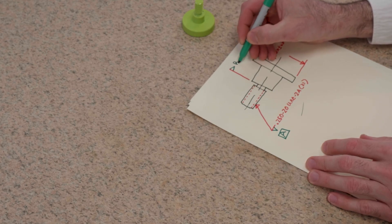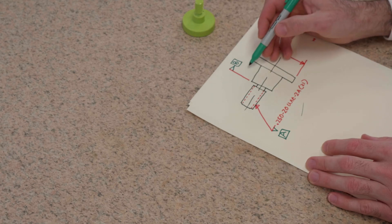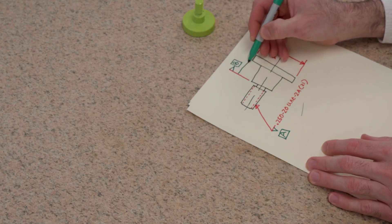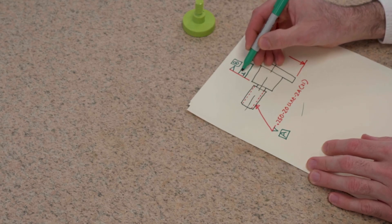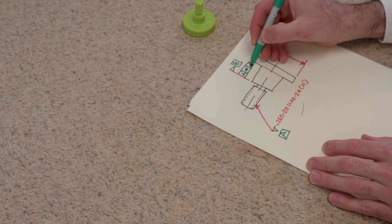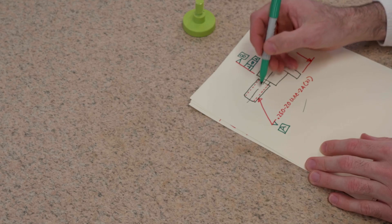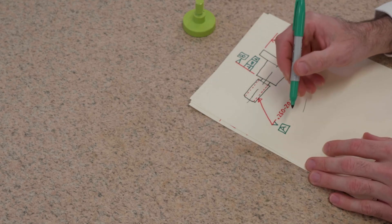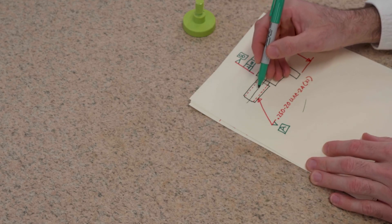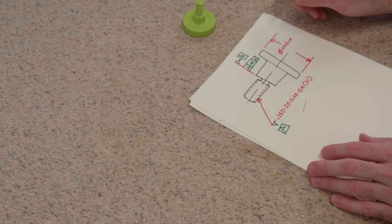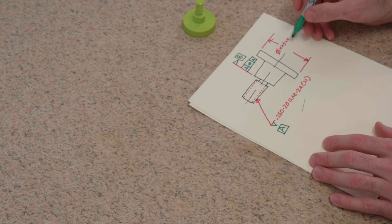Datum B we identified as this surface. Datum B would likely get controlled with a perpendicularity. Datum B is perpendicular to datum A. Datum A is the axis of the pit cylinder of this thread. It would go through the part, and we're just saying datum B needs to be perpendicular to that.